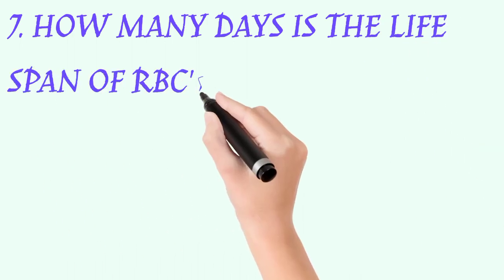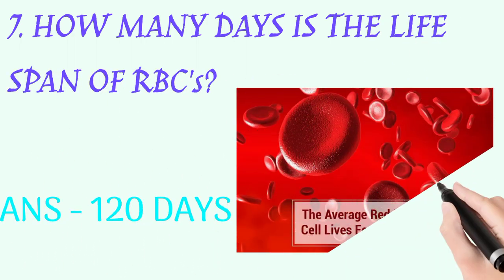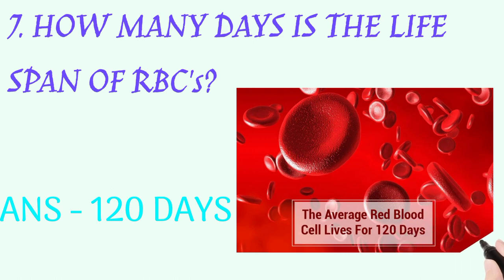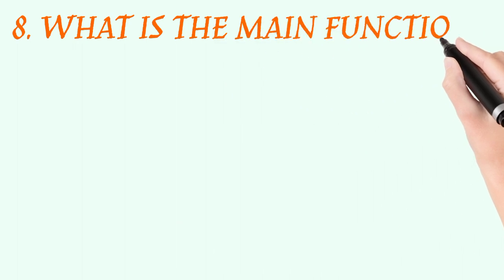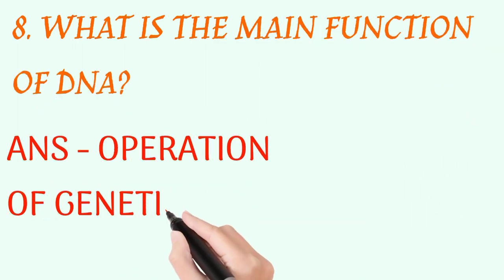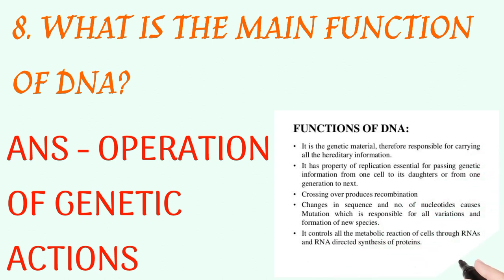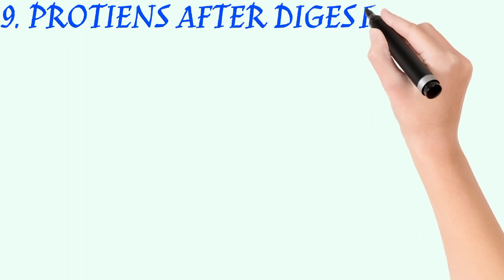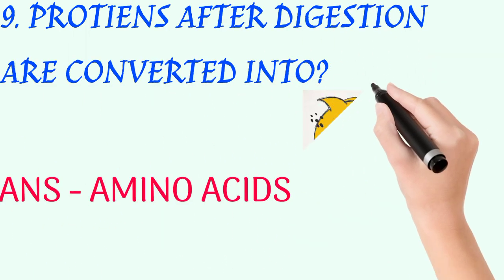How many days is the lifespan of RBCs? Answer: 120 days. What is the main function of DNA? Answer: operation of genetic actions. Proteins after digestion are converted into? Answer: amino acids.